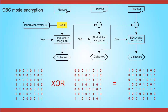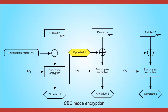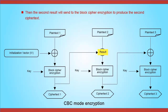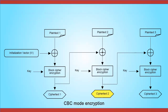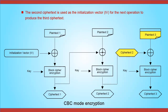After all the remaining bits are done, the result is sent to the block cipher encryption to produce a ciphertext. After that, the first ciphertext is used as the initialization vector for the next operation. The first ciphertext and second plaintext go through an exclusive OR operation to produce the second result. The second result is then sent to the block cipher encryption to produce the second ciphertext.